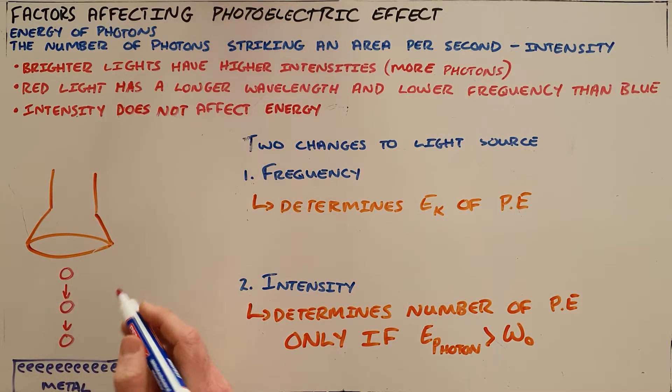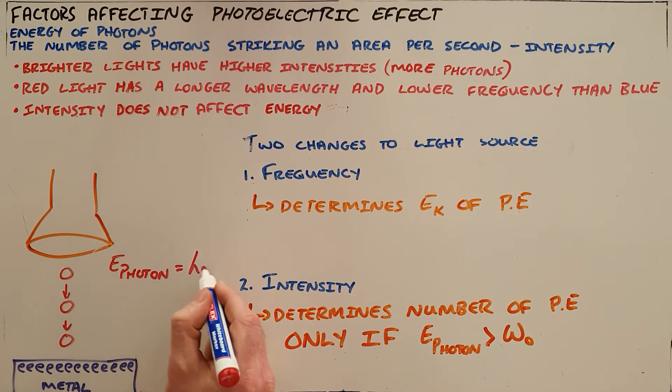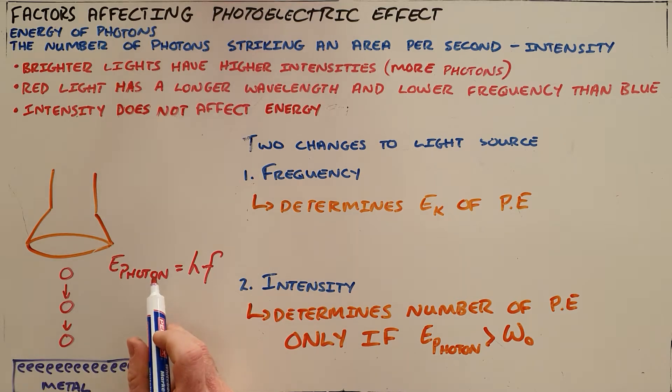We know that we can determine the energy of a photon by taking the product of Planck's constant and the frequency of that light source. We know that every single metal has something called a work function, which is the minimum energy required to eject an electron from that surface, and that work function corresponds to something called a threshold frequency.